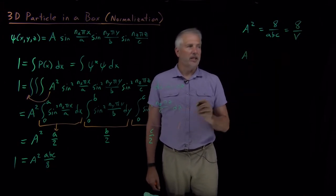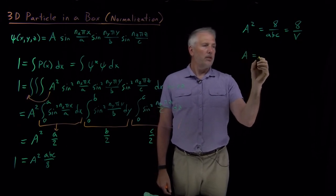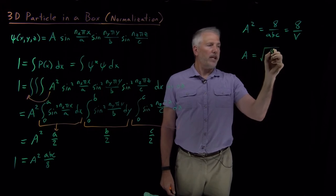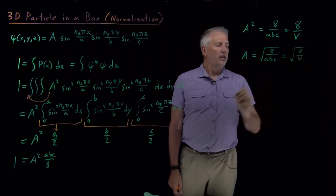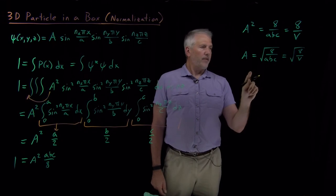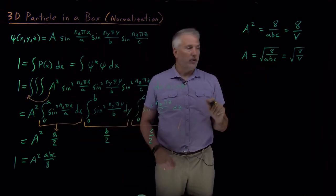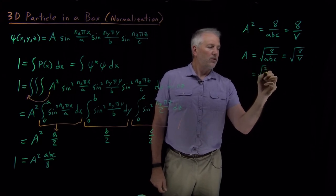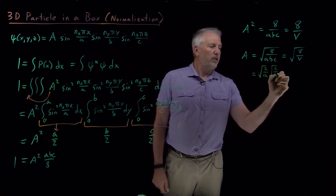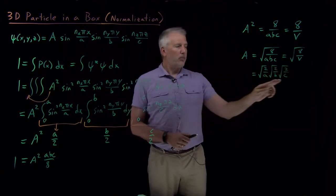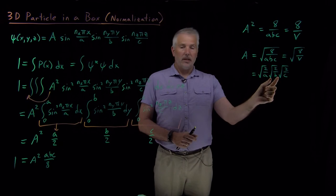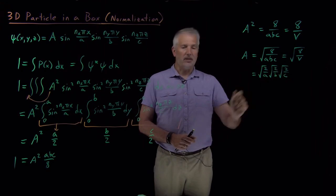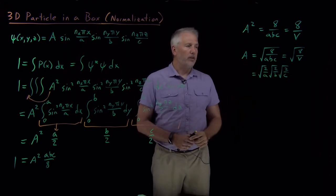Since we're solving for A, A squared needs to be 8 over (a × b × c) — which is just the volume of the box. So the normalization constant A is the square root of 8/abc, which we can also write as the square root of 8/V. Since 8 is 2×2×2, we can also write this as √(2/a) × √(2/b) × √(2/c). That form reminds us that this is the normalization constant for a 1D particle in a box in the x direction, times the one in the y direction, times the one in the z direction. Any one of these is an appropriate way to write the normalization constant.